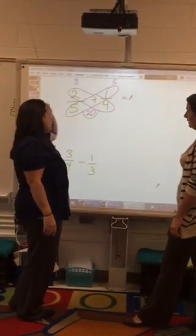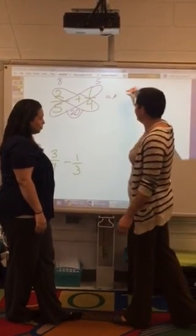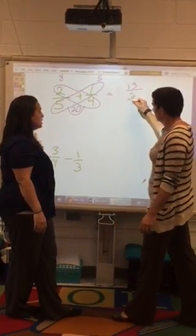We're adding, so it's 8 plus 5. 13. And your denominator? Can you simplify?